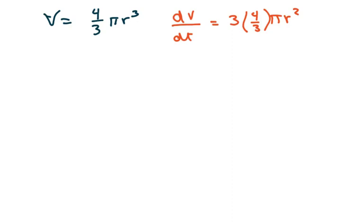And that's with respect to a derivative of r with respect to time. And you simplify this, and you're going to get 4 pi r squared, derivative of r with respect to time.